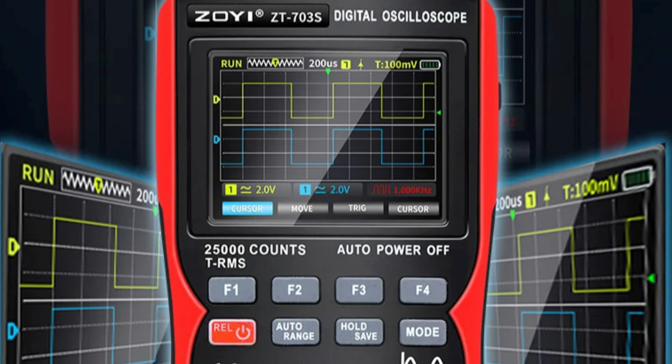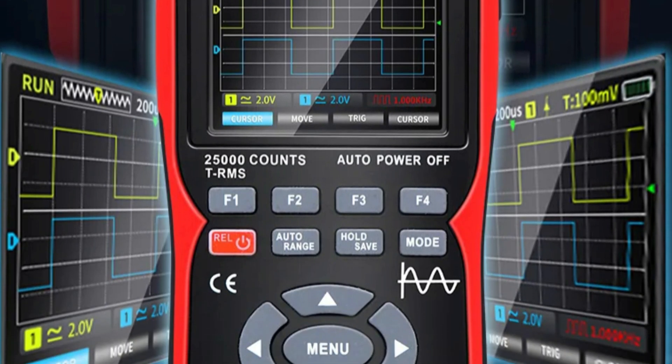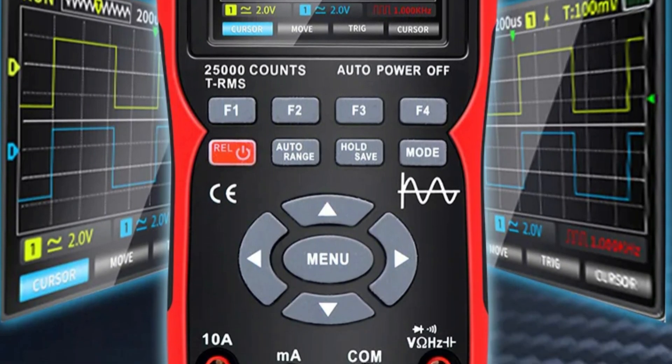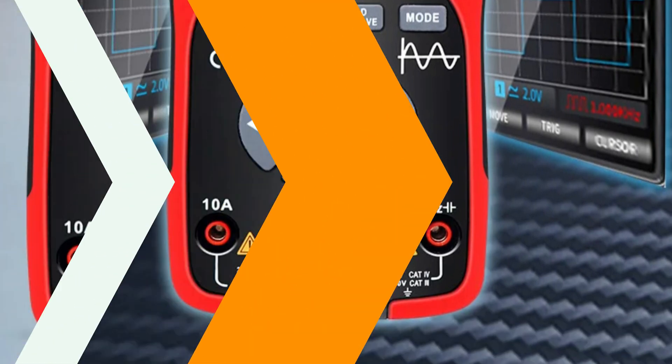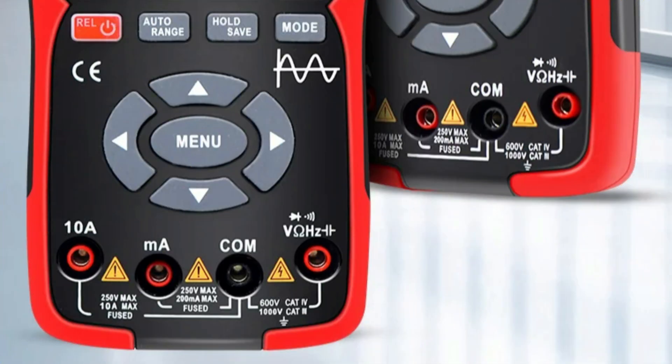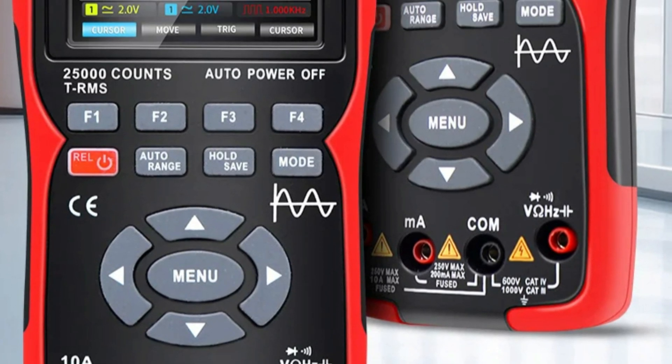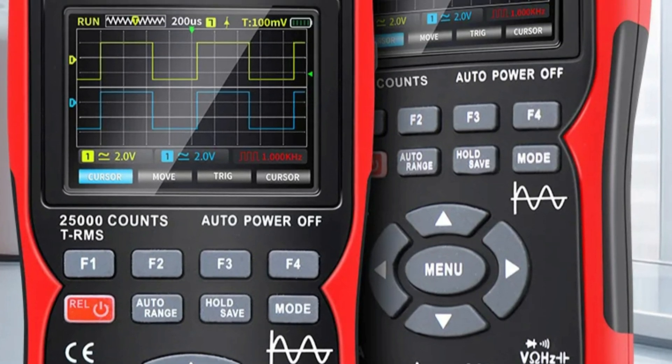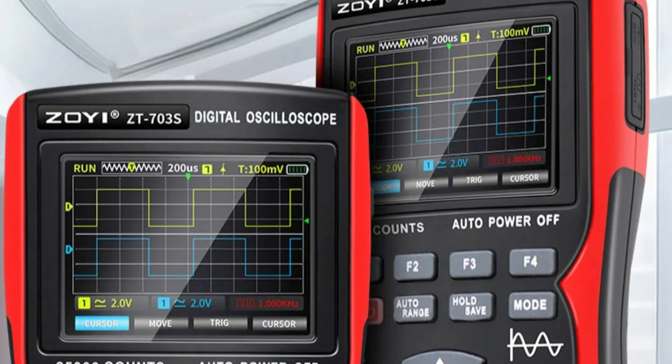The multimeter also features waveform interpolation for smooth readings, and a sweep speed range of 50 ns per DIV to 20s/DIV for waveform analysis. It supports both DC and AC input coupling and can record data up to 65 kilobytes.